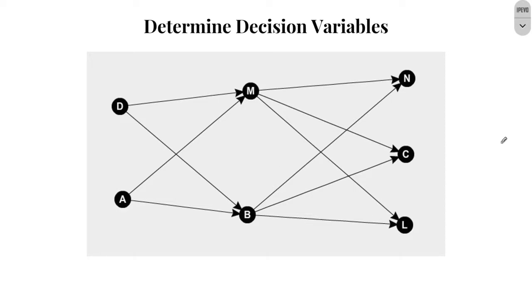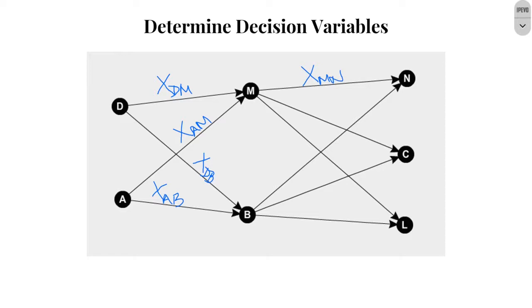My decision variables are representative of how much inventory I'm sending along a certain pathway, meaning each branch in the diagram gets a decision variable associated with it. I'm going to represent that with an X with two subscripts. The first subscript represents where the item came from and the second where it's going. For example, X sub DM means it came from Denver and is going to Memphis, and X sub DB means it's coming from Denver going to Boise. I repeat this process for all branches.